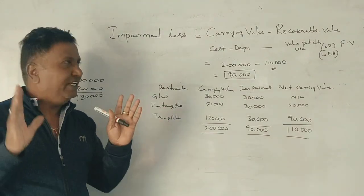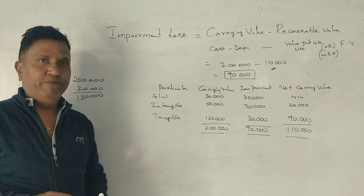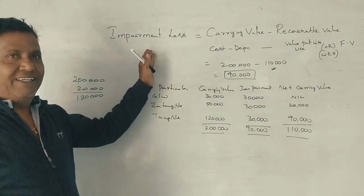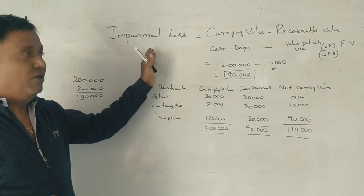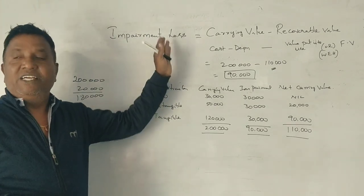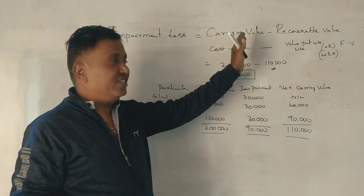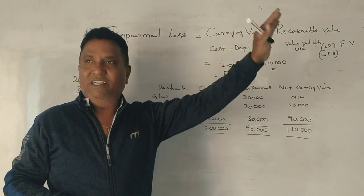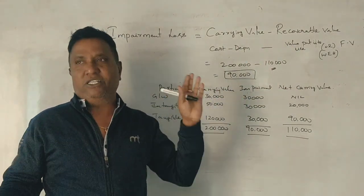The only thing to remember is impairment loss. Impairment loss refers to the excess of carrying value over recoverable value, and that excess is called impairment loss.